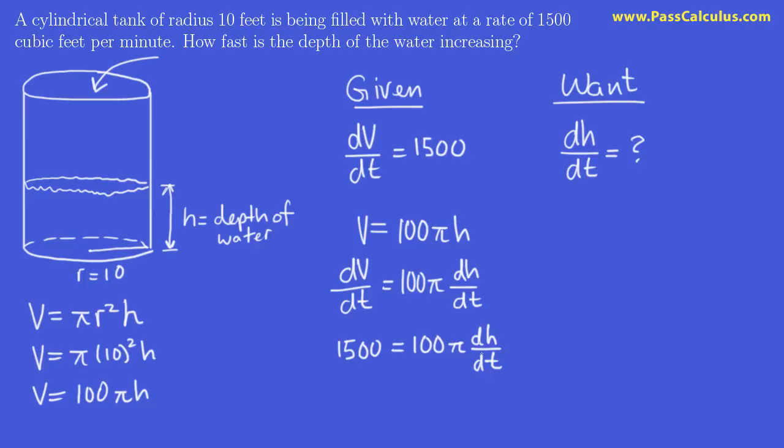Now we're looking for dh/dt, which is simply 1500 divided by 100π. We can simplify this: the zeros cancel and we get 15/π.